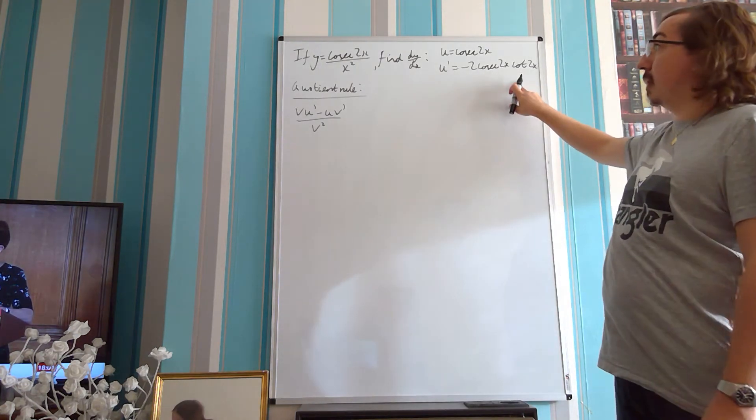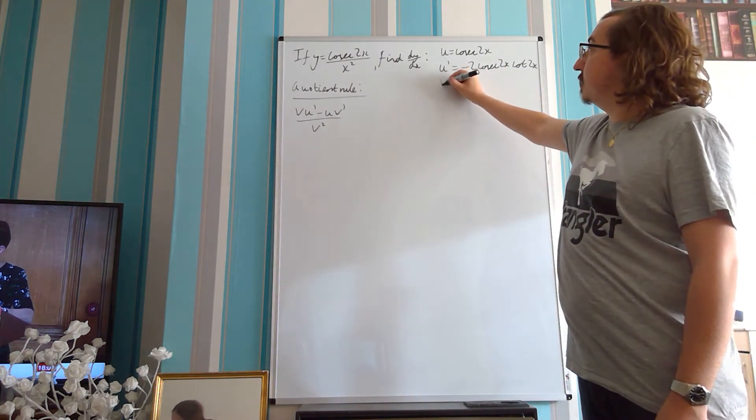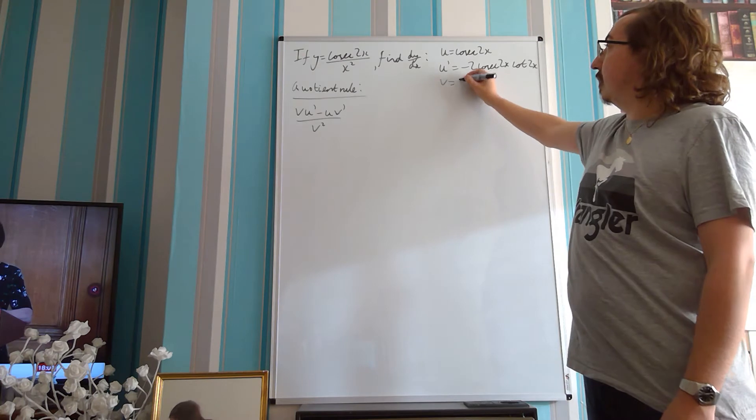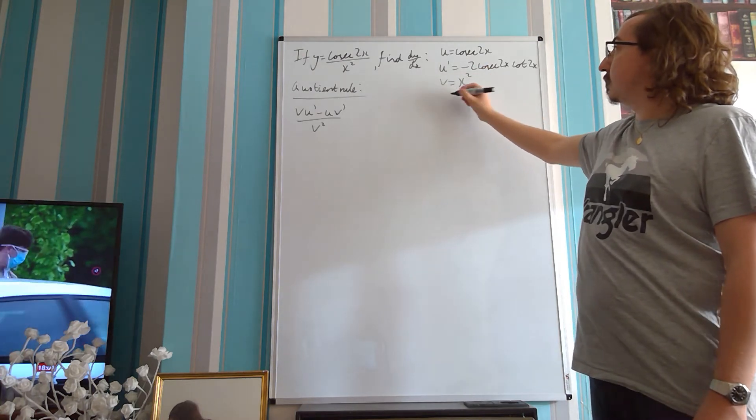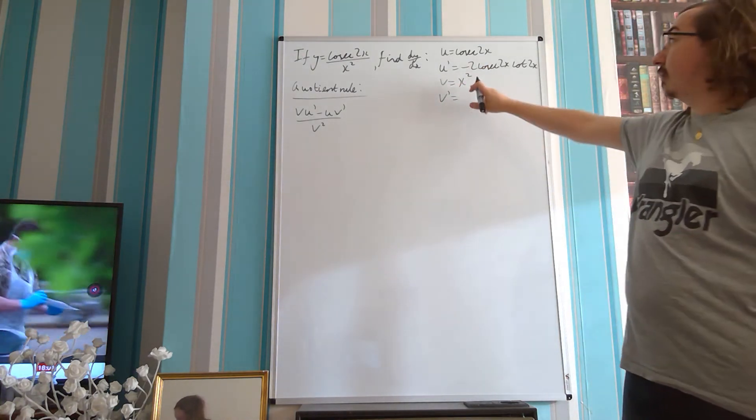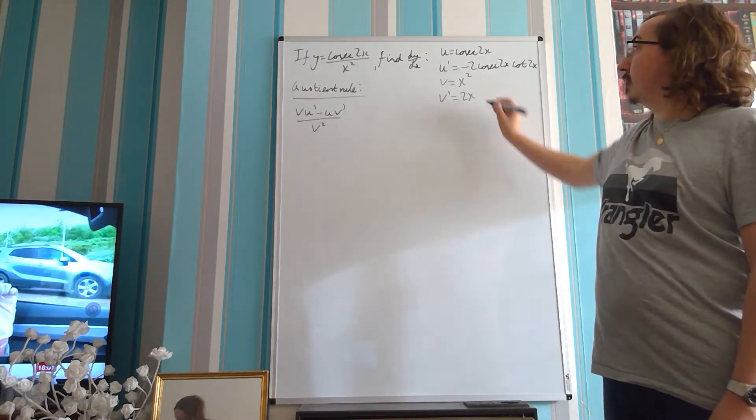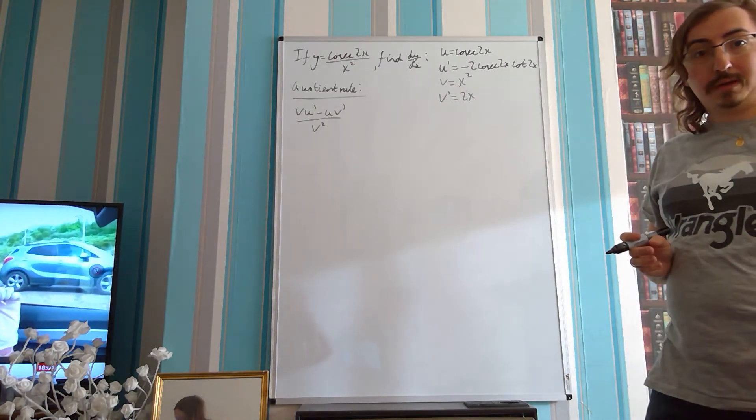So that's the hard part done. We also need to have our v, which is our denominator, which is x squared, and our v dash, the differential of x squared with respect to x. Nice and easy, 2x.